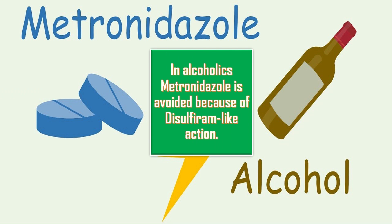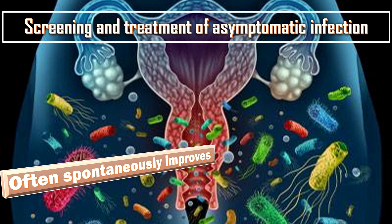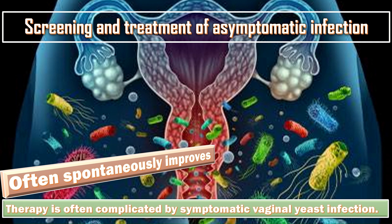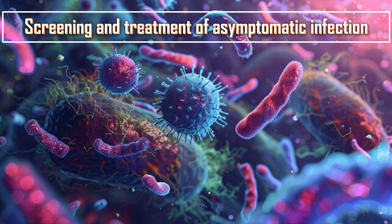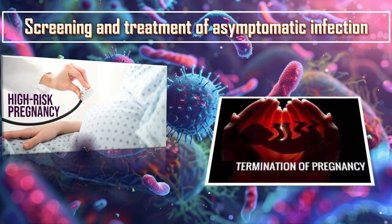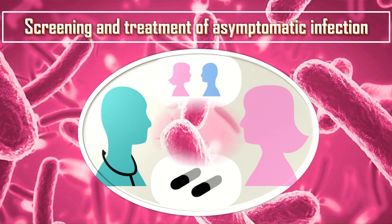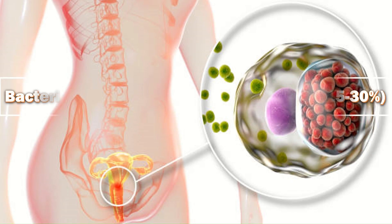Asymptomatic infection is generally not treated as patients often spontaneously improve and therapy is often complicated by symptomatic bacterial yeast infection. Treatment is indicated for asymptomatic women who are about to undergo gynaecological procedures, particularly termination of pregnancy, and in high-risk pregnancies. No evidence suggests that treating the sexual partner of women with bacterial vaginosis is beneficial.